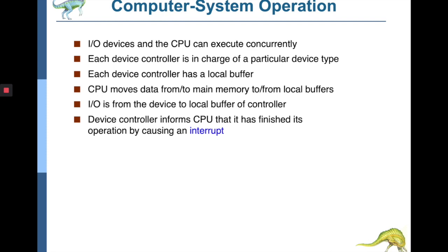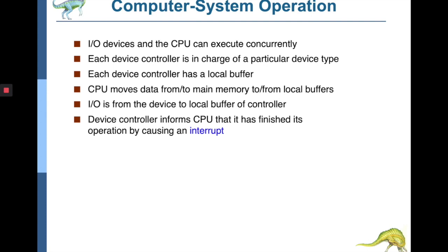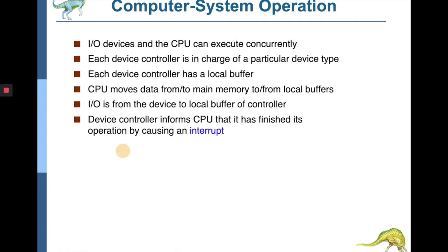I/O devices and CPUs can work concurrently. A most important part of the operating system is to listen to I/O requests, process them, and deliver data to memory or the CPU. With advancements like DMA — Direct Memory Access — programs can run concurrently. Each device controller is in charge of a particular device; for example, the USB controller can control multiple devices at the same time. The device controller has a local buffer where data moves to and from main memory.